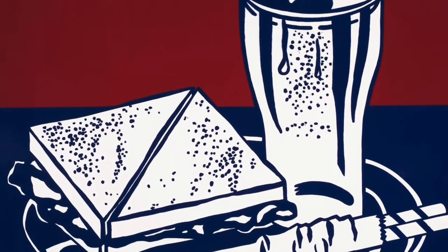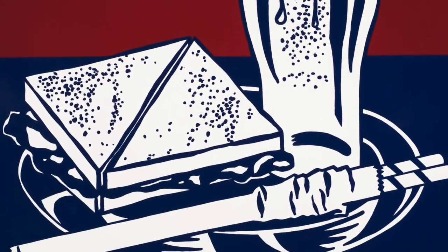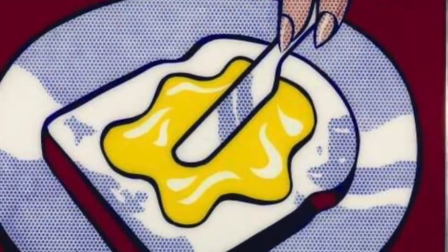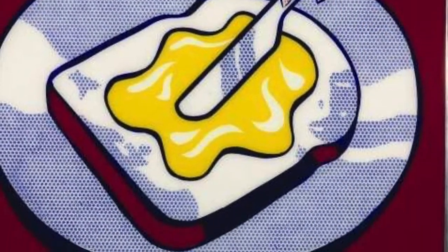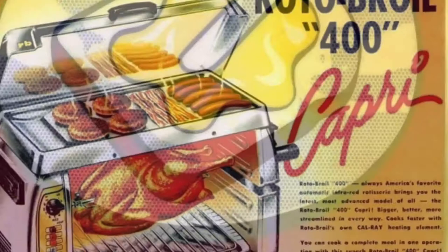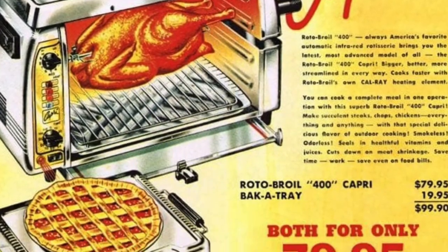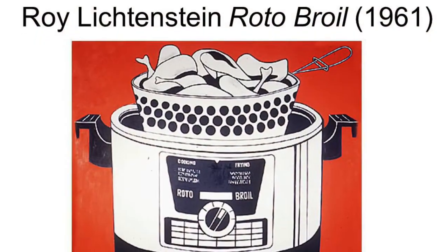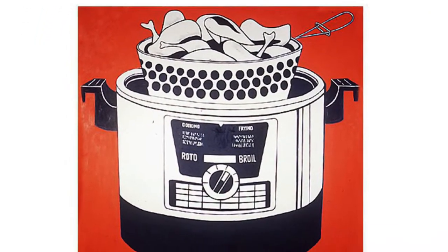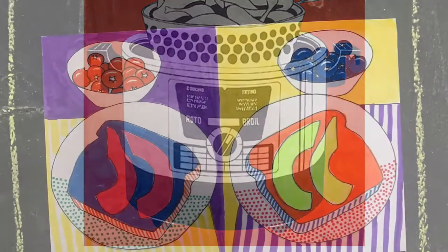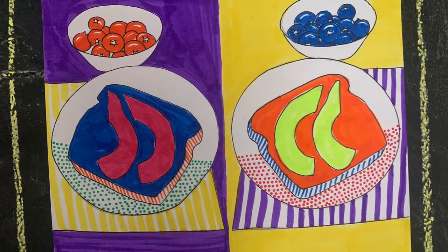For this lesson, we're going to seek inspiration from Roy Lichtenstein's work, specifically his food works or his everyday object works. He's most known for his comic-like style and he does a lot of portraits of people in this comic book style and he also includes a lot of onomatopoeias like bam and pop.